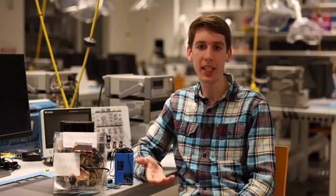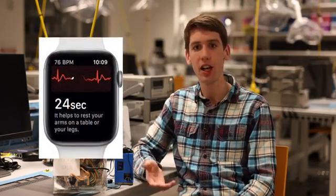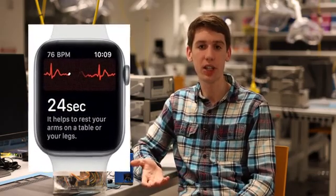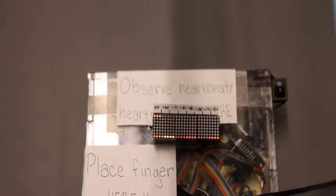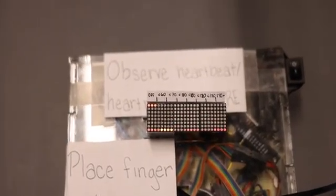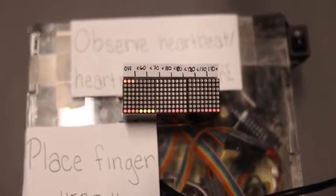Next we needed a way to display the heart rate. We were inspired by the ECG graphs on Apple watches which show a few seconds of history in real time. We chose to use 3.8-inch displays each with 64 dots for a total of 192 LEDs.